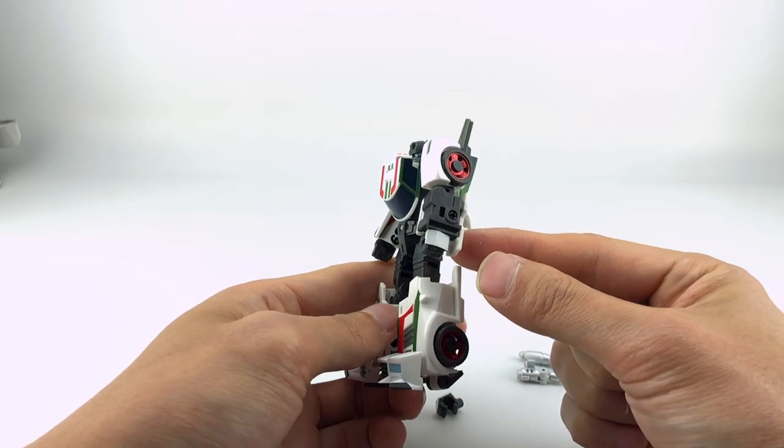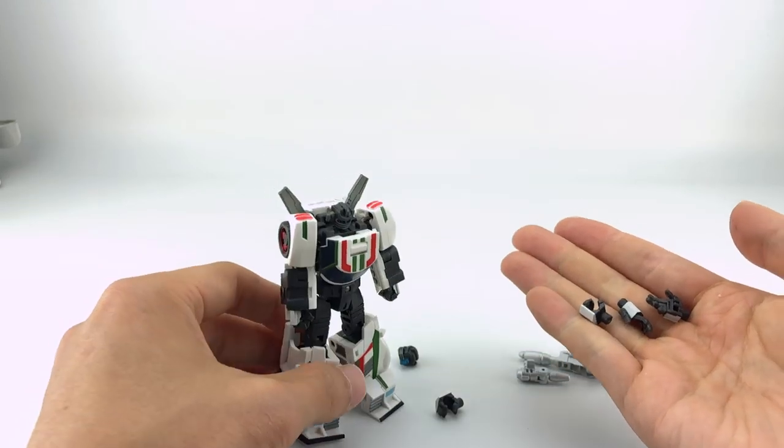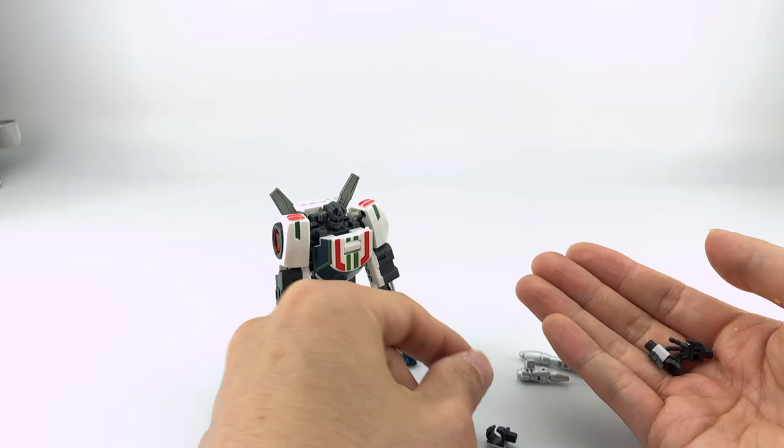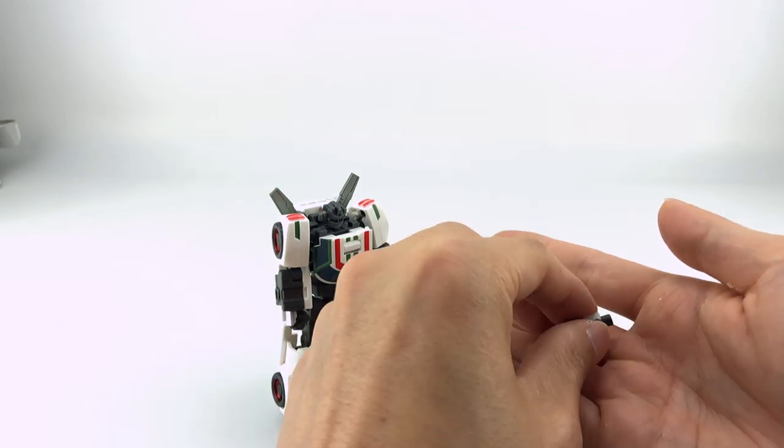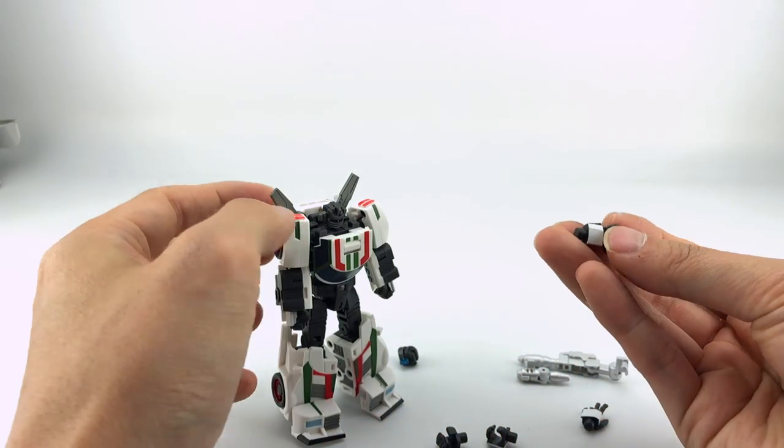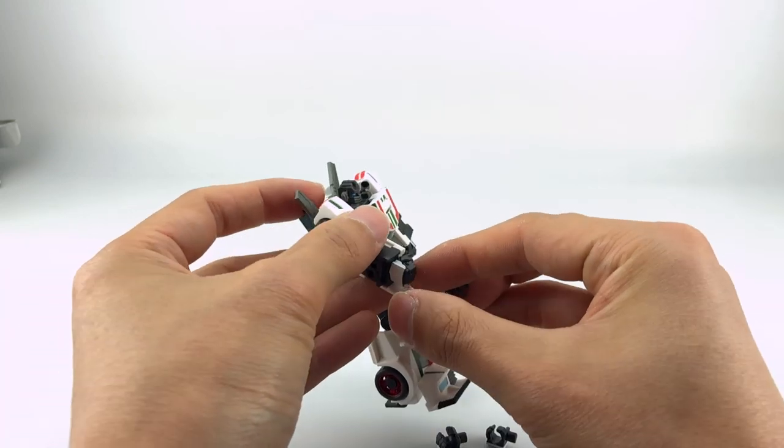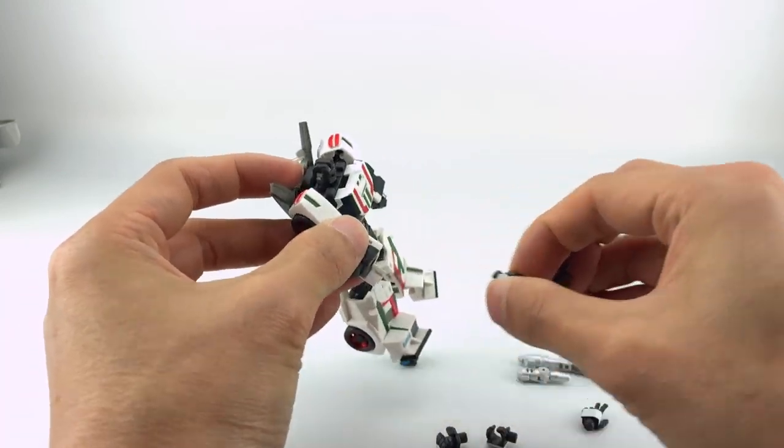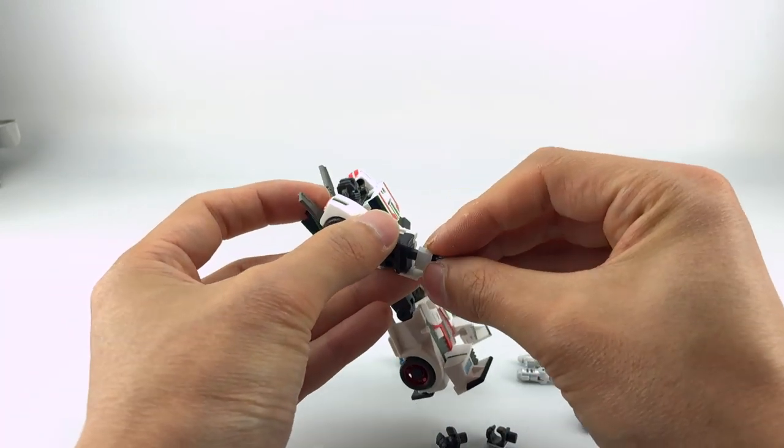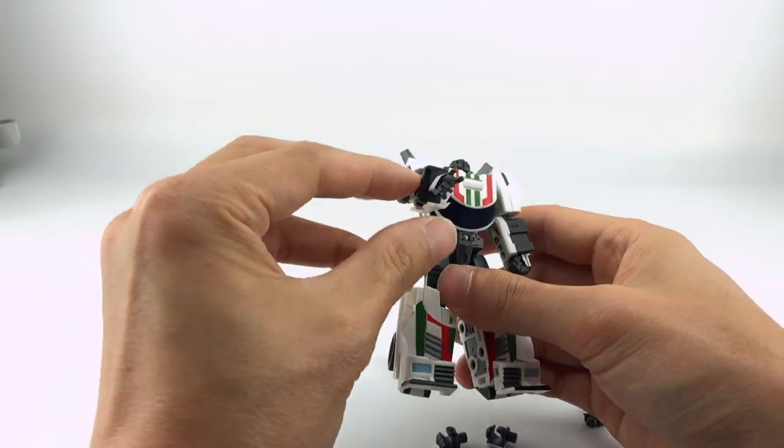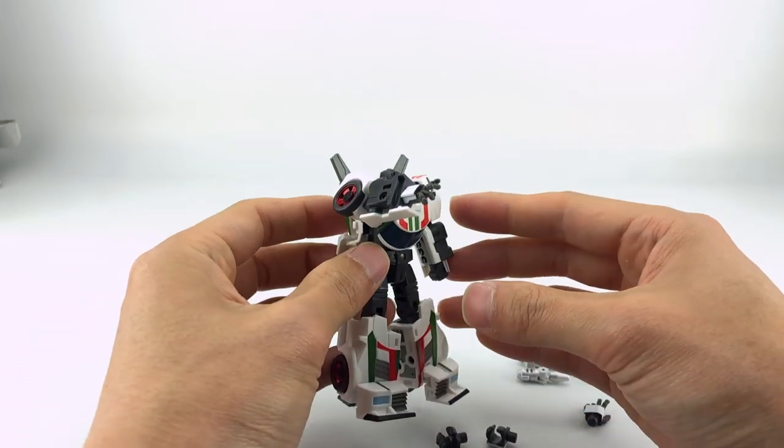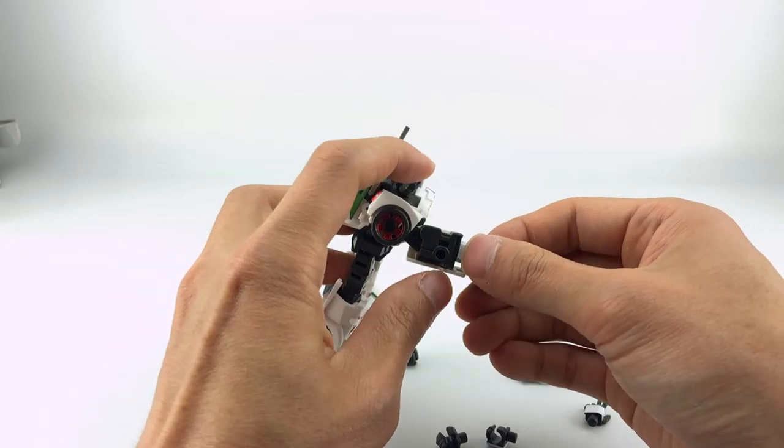He comes installed with these standard fists that are closed, but he also comes with open fists which he'll use for his weapon holding, and then the kind of splayed hands that we usually see. Like, stop in the name of love.